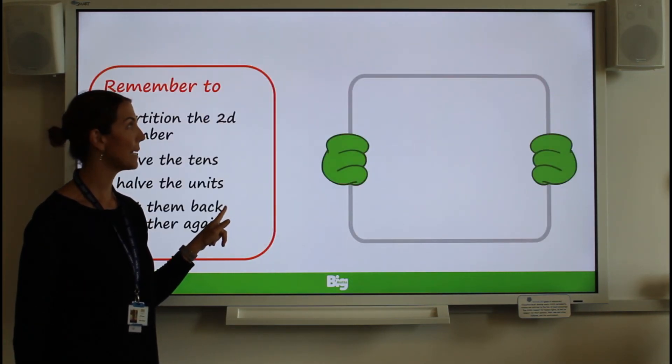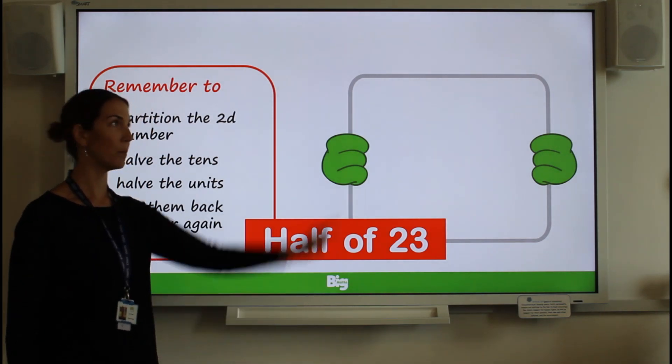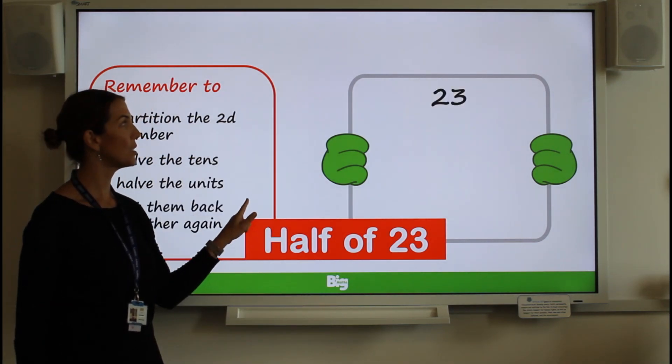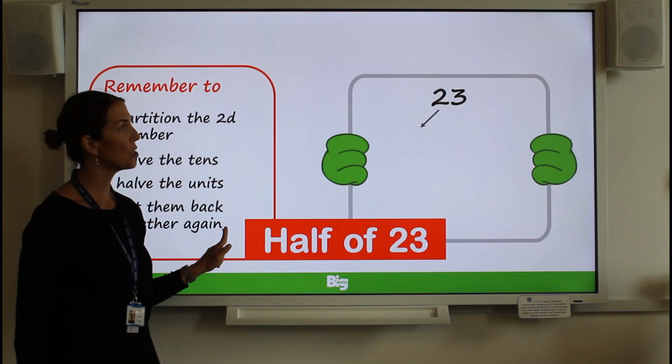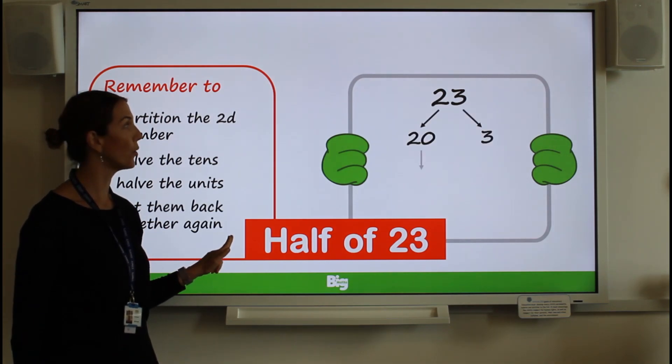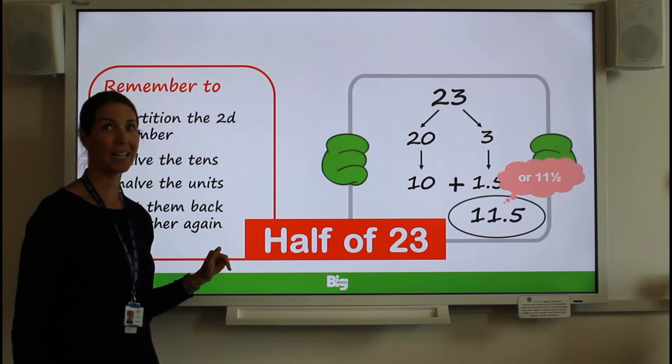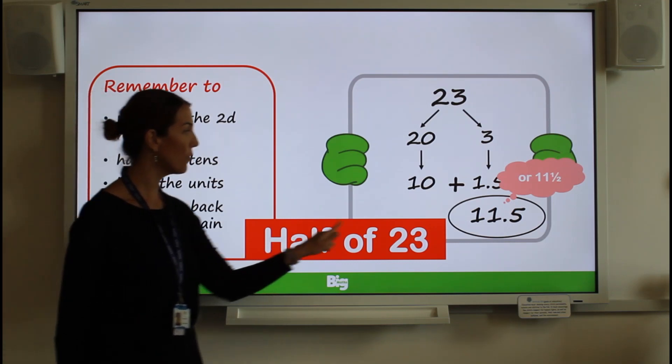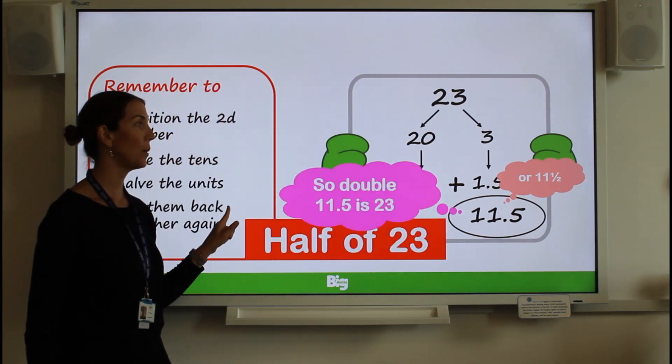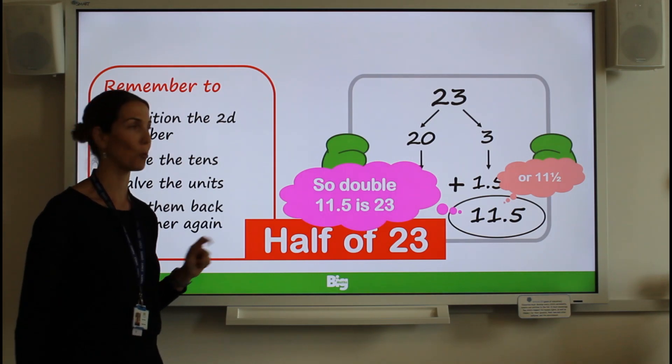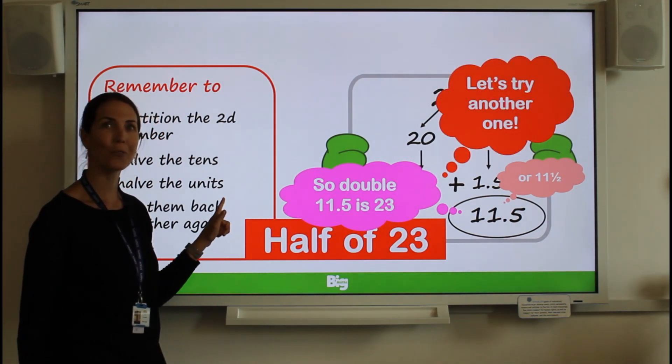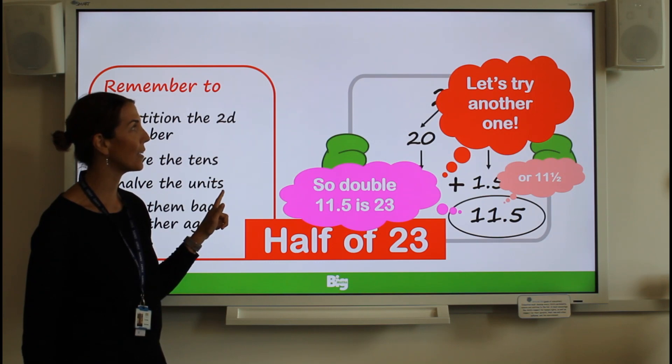Ready? Steady. Next one: 23. Write it at the top. Partition it into the tens, partition it into the ones. Half each one. And then don't forget to put it back together. Let's see what you got as well. Did you get 11.5 or 11 and a half? So I know if half of 23 is 11.5, I know double 11.5 will give me the 23. So I can get more than one fact from completing the halving questions.